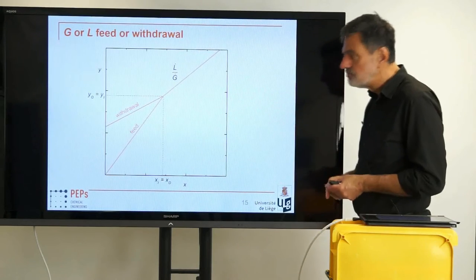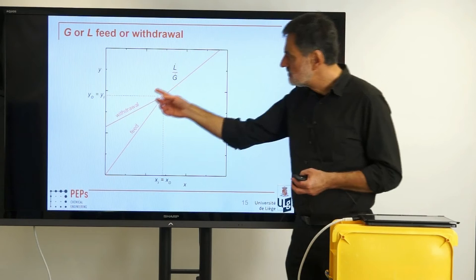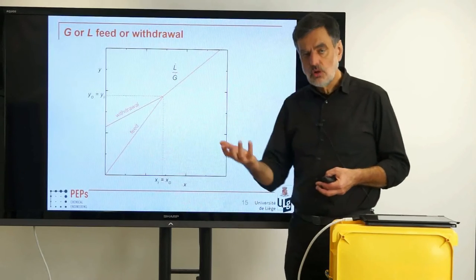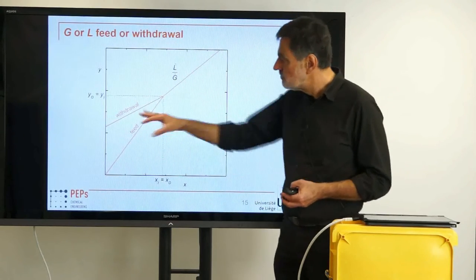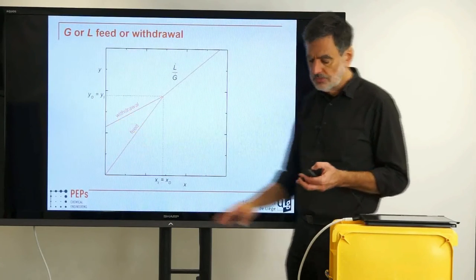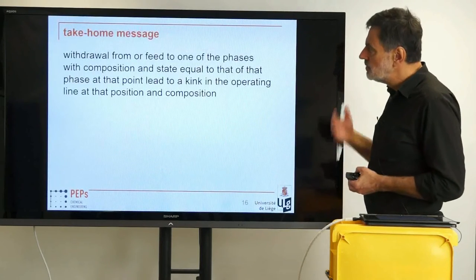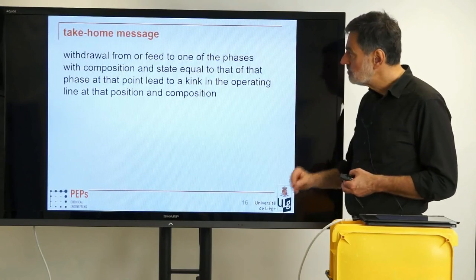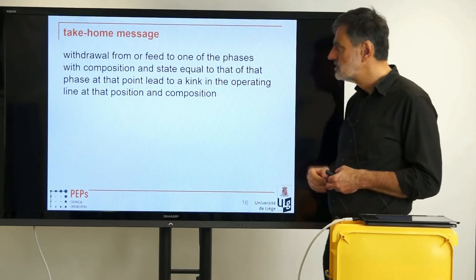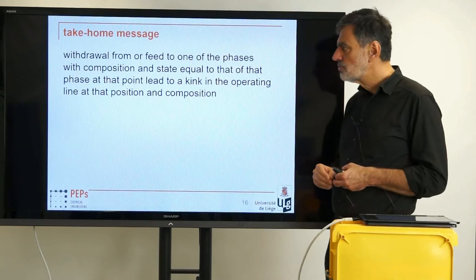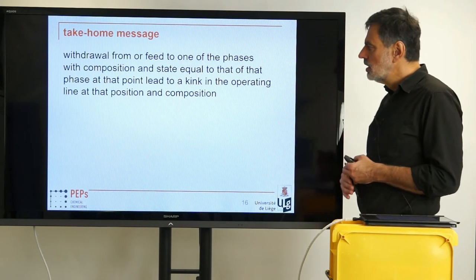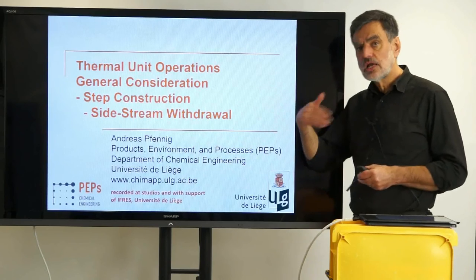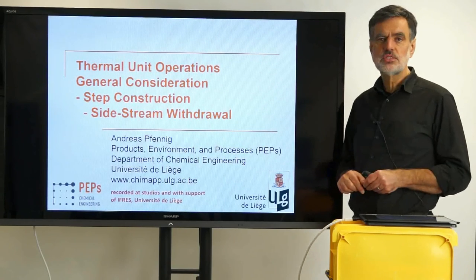We can regard withdrawal and feed in this single diagram in a simple way. In both cases, we have simply a kink in the operating line: above we have the L-dot over G-dot slope, and below we have the corresponding slope with the variables that apply below — L-dot prime or G-dot prime. The take-home message: withdrawal from or feed to one of the phases, with composition and phase state equal to that of that phase at that point, leads to a kink in the operating line at that position and composition. Thank you for watching this short video on side stream withdrawals and feeds under certain conditions — I hope to see you again in the next videos.